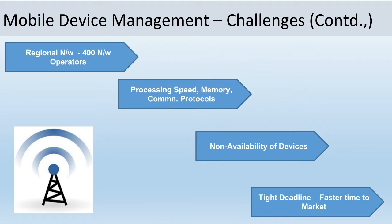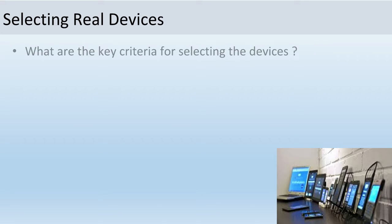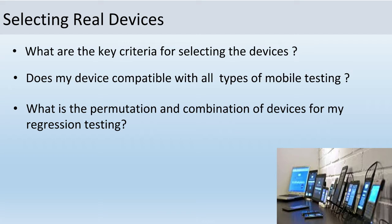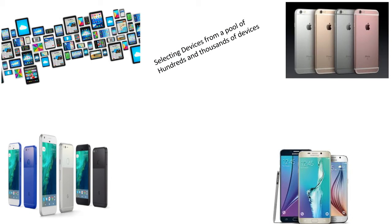With all these challenges, how am I going to select the device? What are the key criteria for selecting devices? Is my device compatible with all types of mobile testing? What is the permutation and combination of devices for my regression testing? What is the device market share? What about user ratings and reviews? These questions are not easy to answer. So the question becomes: how are we going to select devices from a pool of hundreds and thousands of devices?